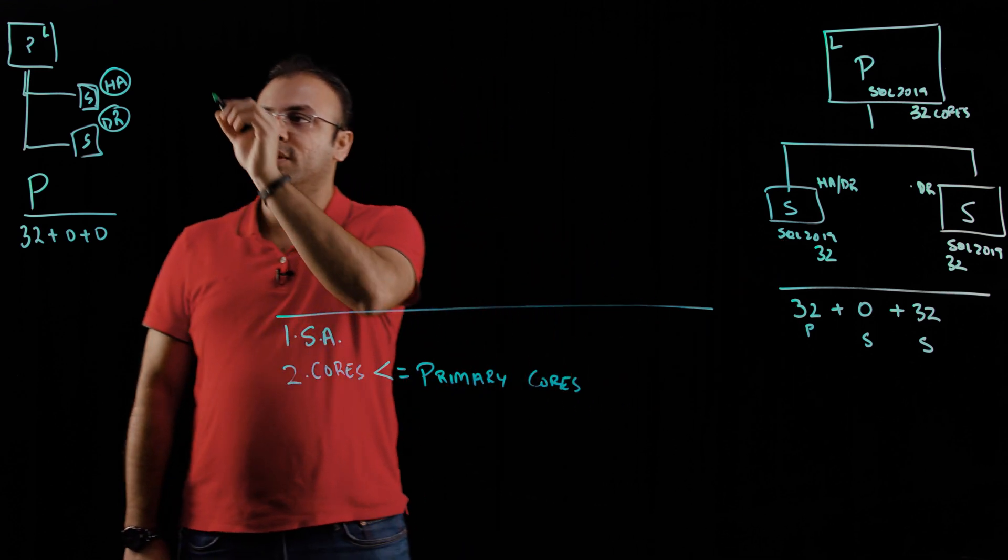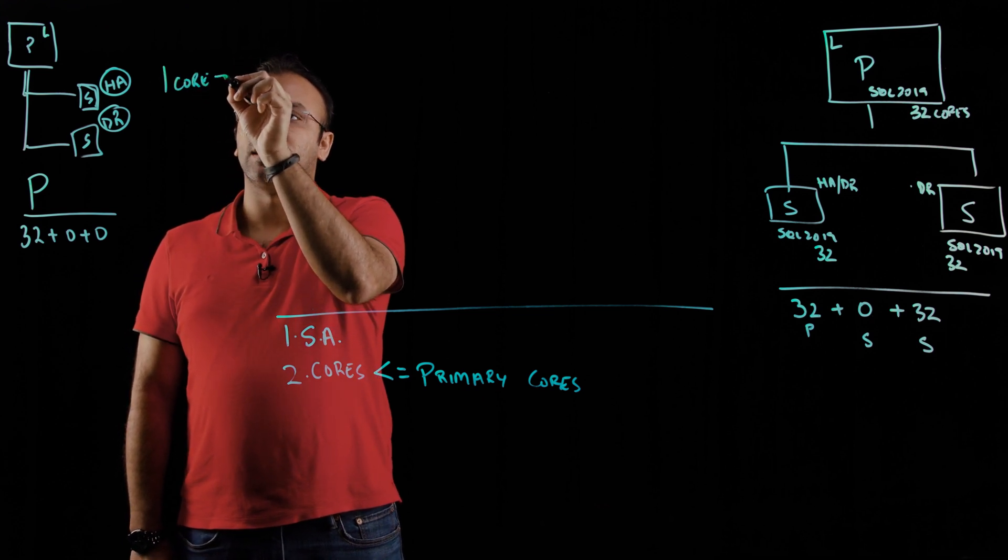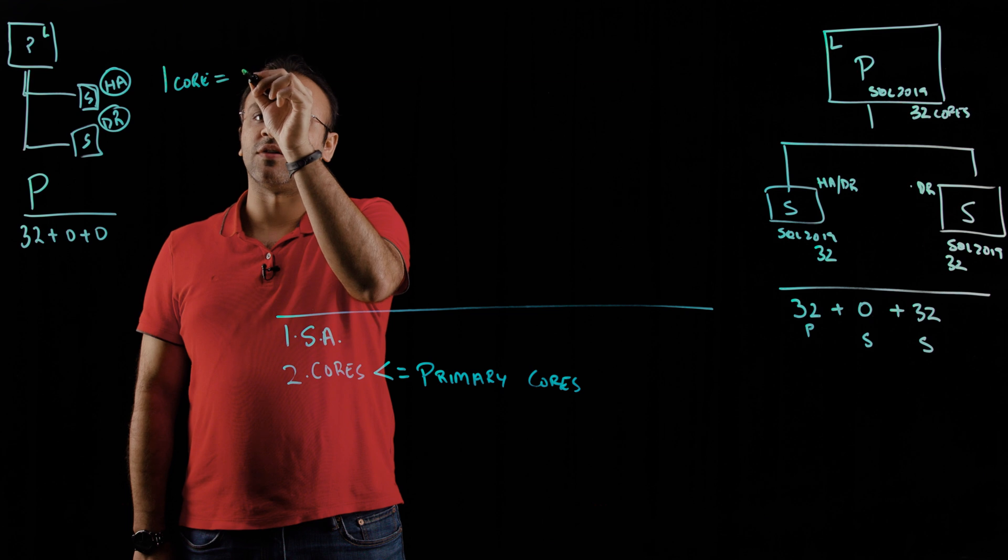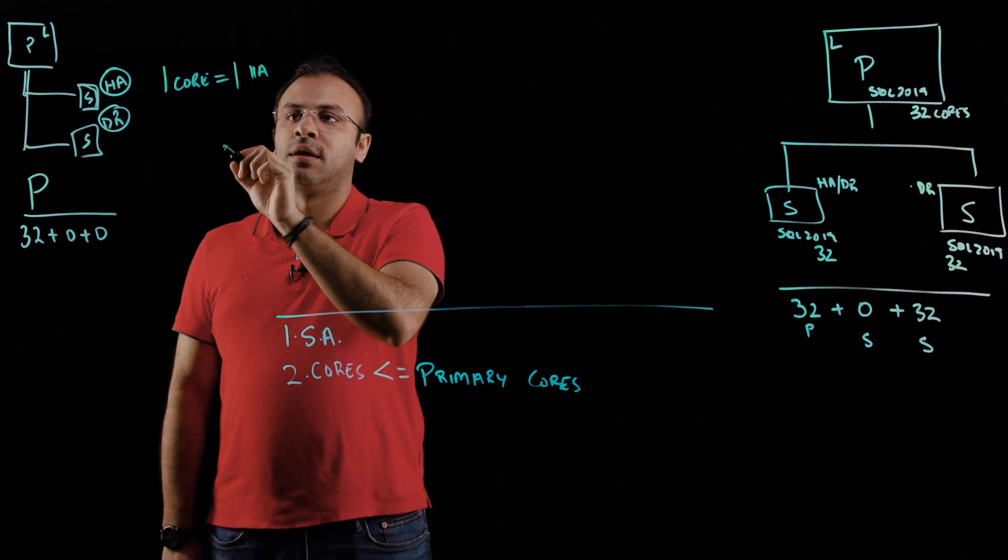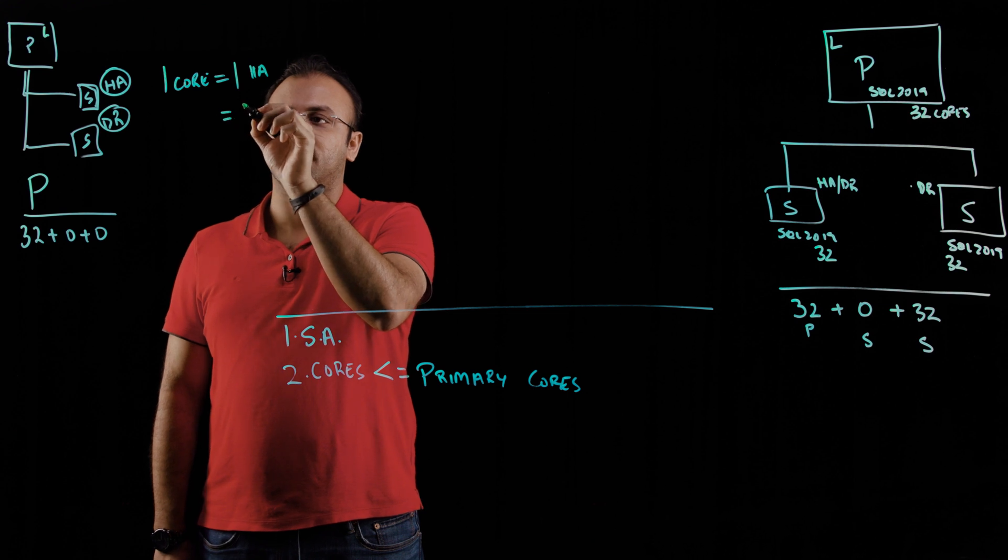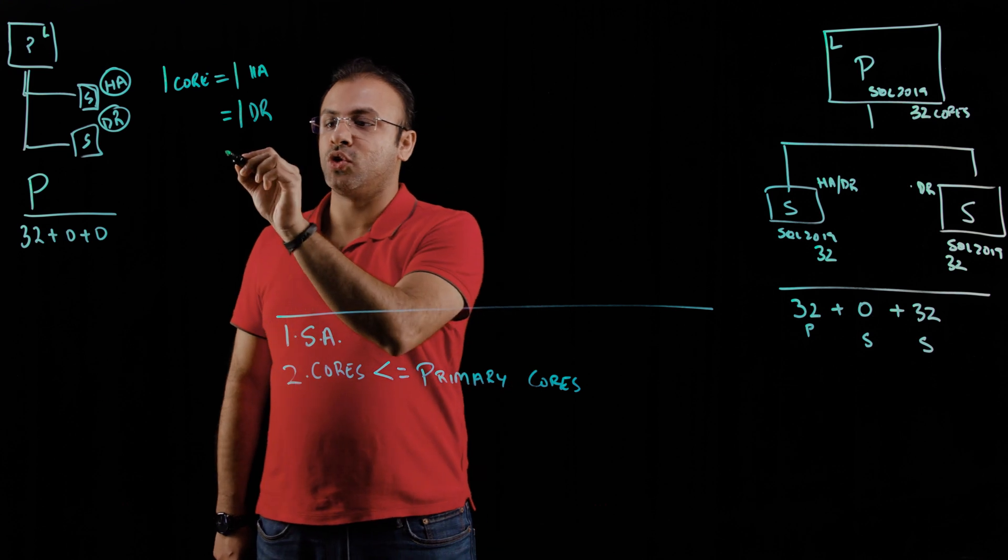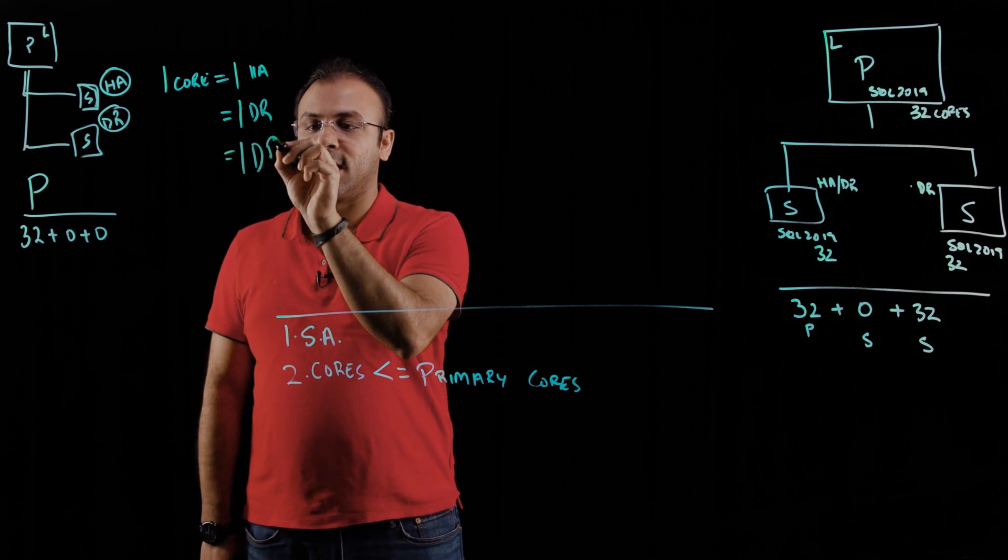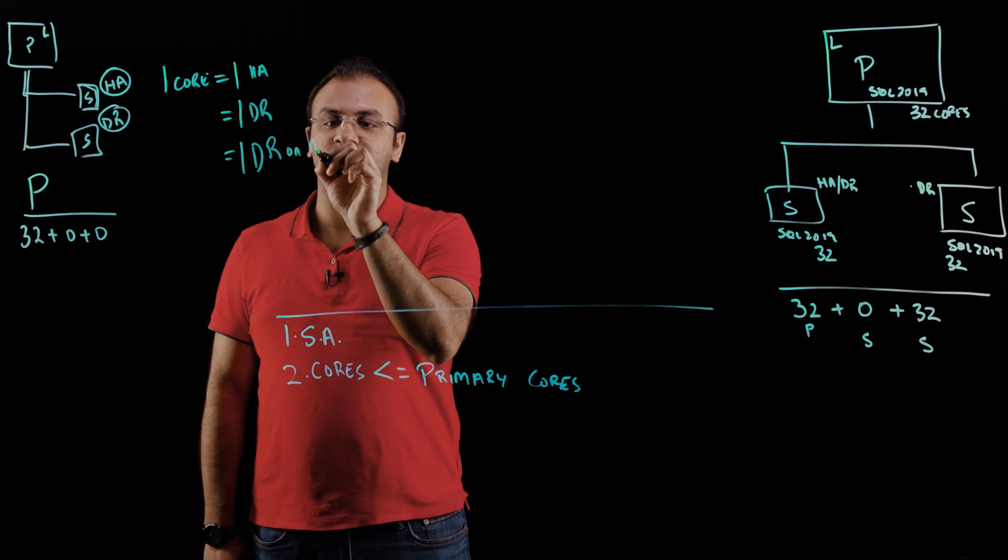So essentially, for each core that you license for SQL Server post November and you have software assurance, you get one HA core, which is synchronous, one DR core, and in addition to that, you also get another DR core running on Azure VMs.